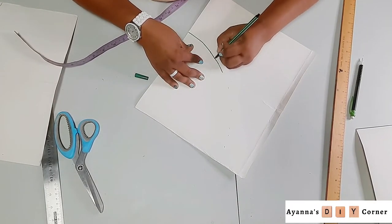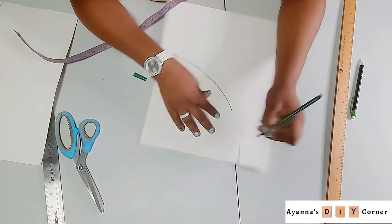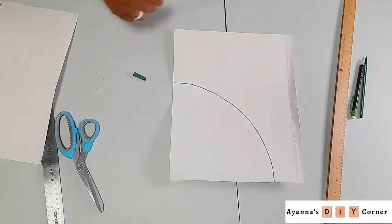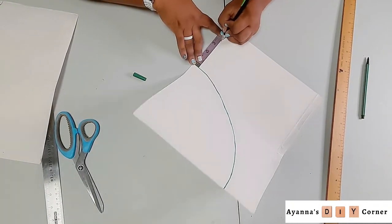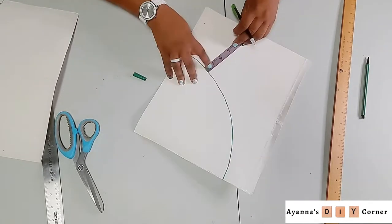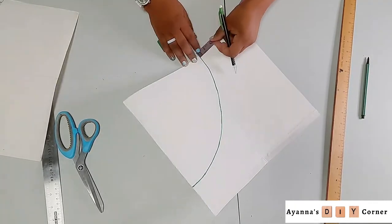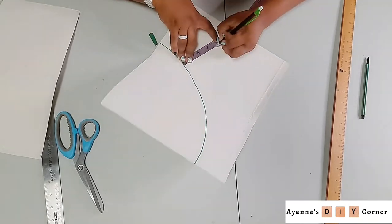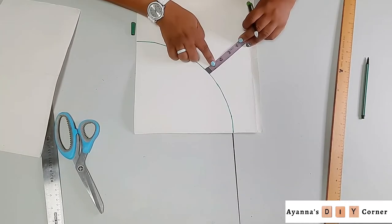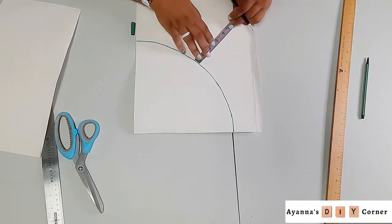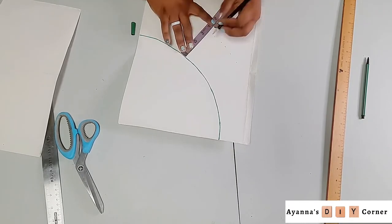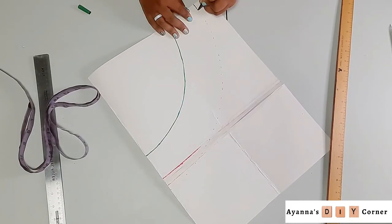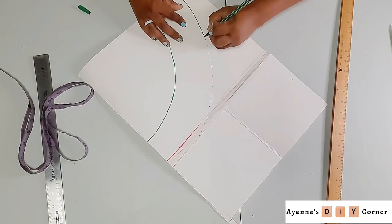Once you have all your marks, connect your dashes to create your final curve. Now determine how wide you want your brim to be. For me, I want it 3 inches in width, so I'm going 3.5 for seam allowance. Place your measuring tape right on the curved line and create the width you want.